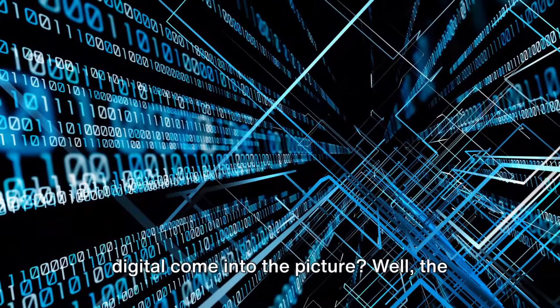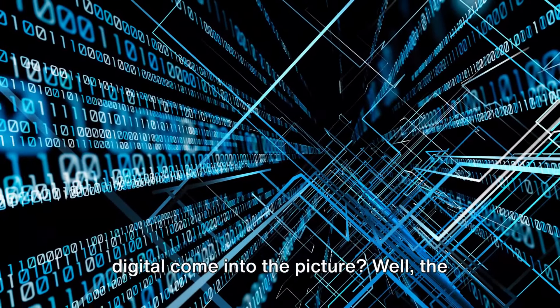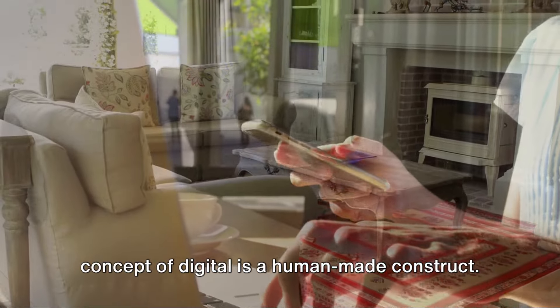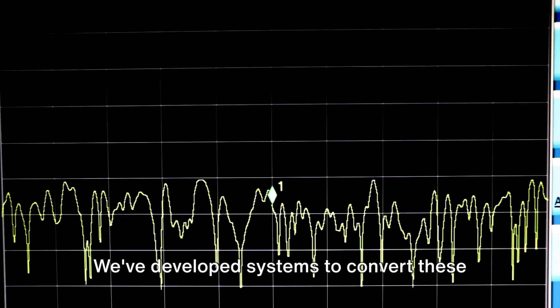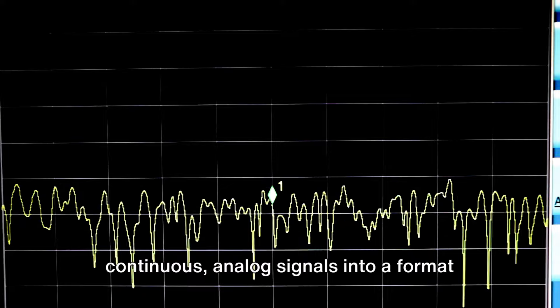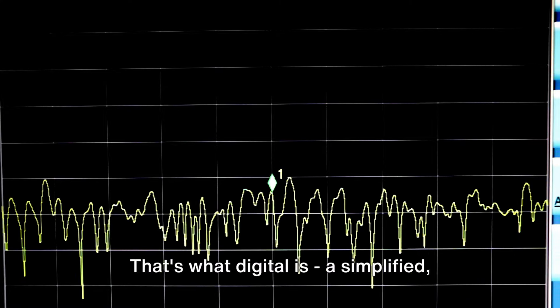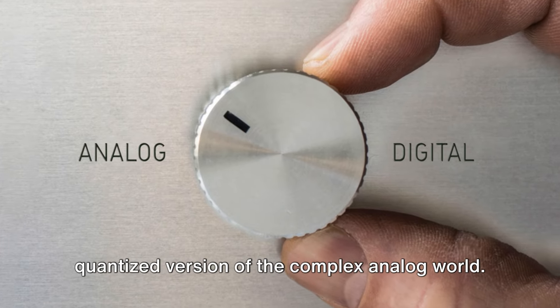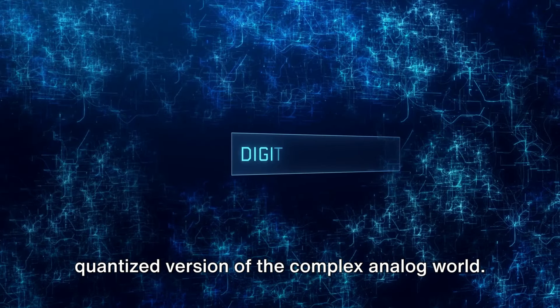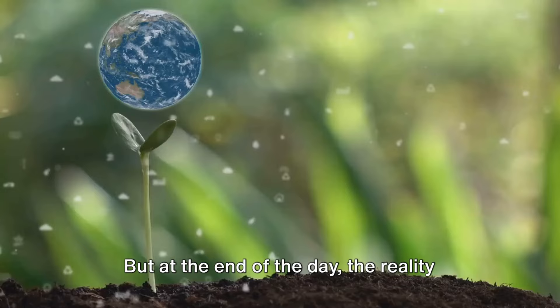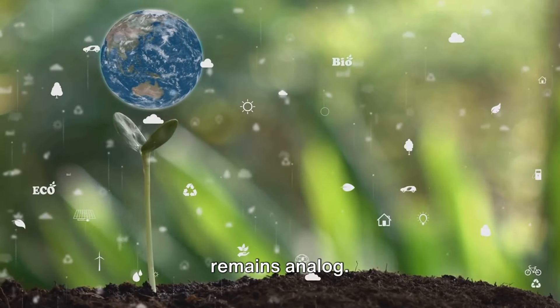Now, you might be wondering, where does digital come into the picture? Well, the concept of digital is a human-made construct. We've developed systems to convert these continuous analog signals into a format that's easier for machines to understand and process. That's what digital is—a simplified, quantized version of the complex analog world. But at the end of the day, the reality remains analog.